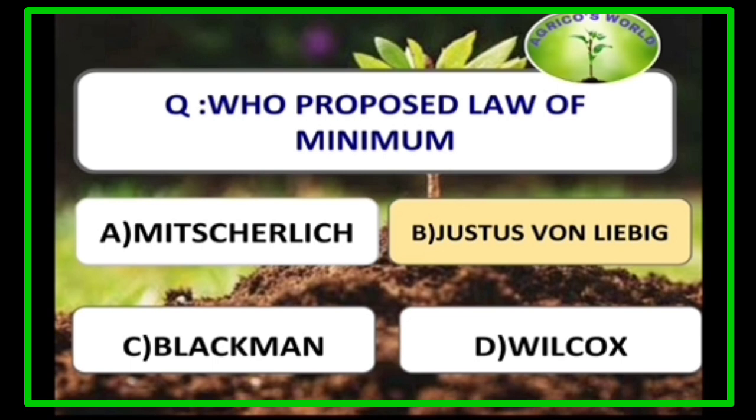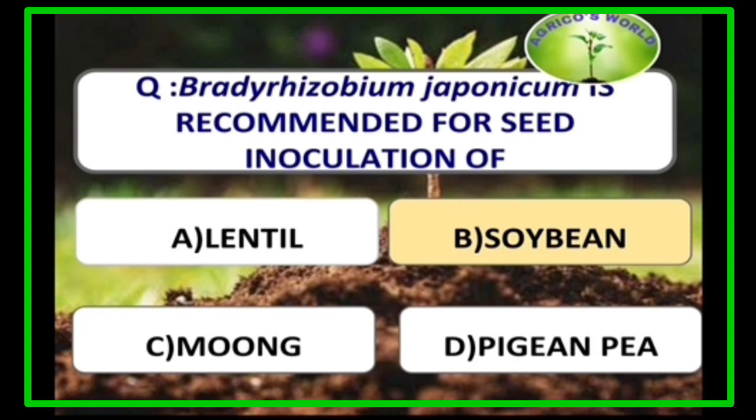Justice von Liebig proposed the law of minima. The inverse yield nitrogen law was proposed by Wilcox. The law of limiting factors was proposed by Blackman.